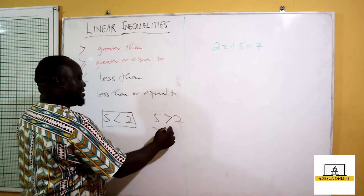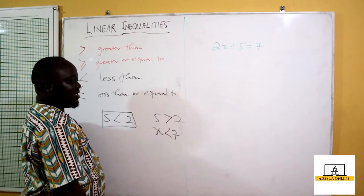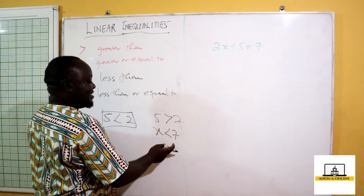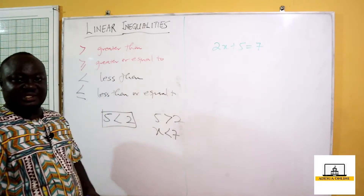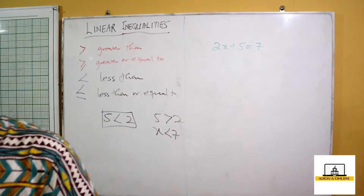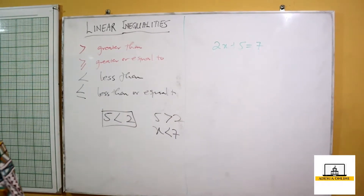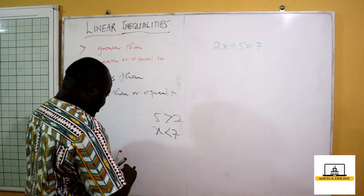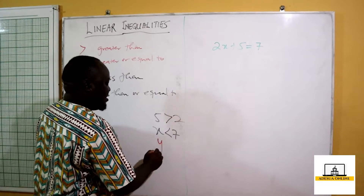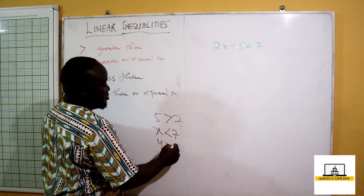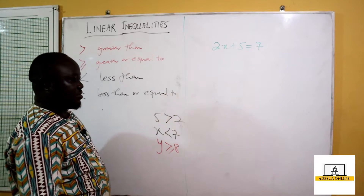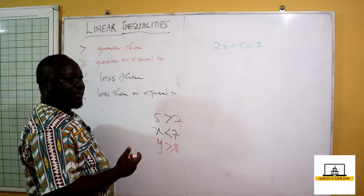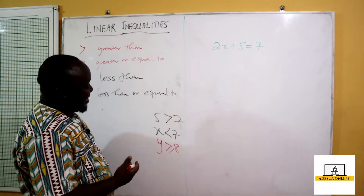I can also have x is less than 7. We can also have y is greater than or equal to 8. These are all linear inequalities.